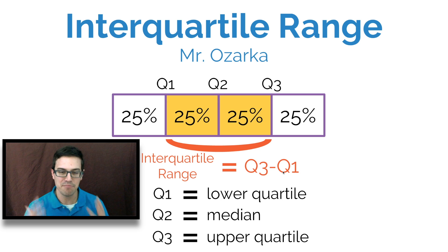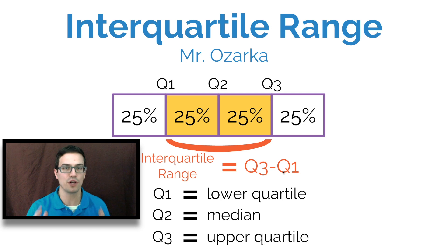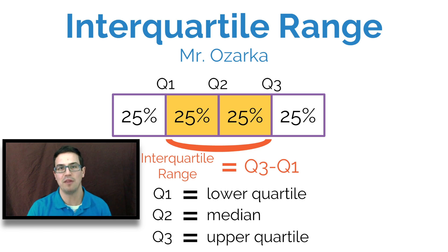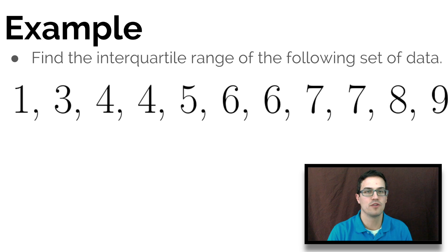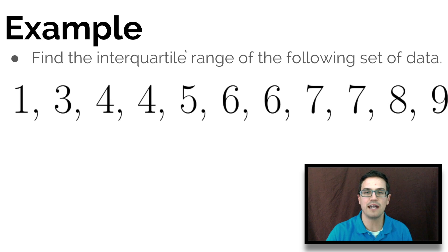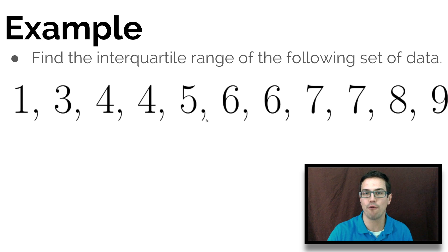To cement this a little bit more in your head, we're going to be looking at some examples to figure out what the interquartile range is all about. The example says: find the interquartile range of the following set of data — 1, 3, 4, 4, 5, 6, 6, 7, 7, 8, 9.